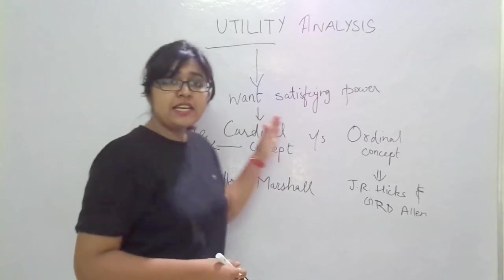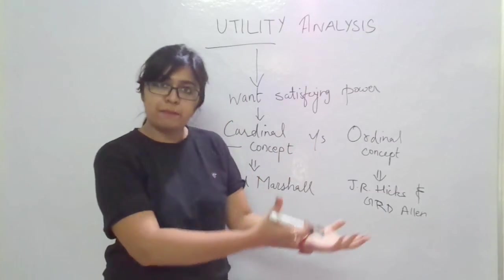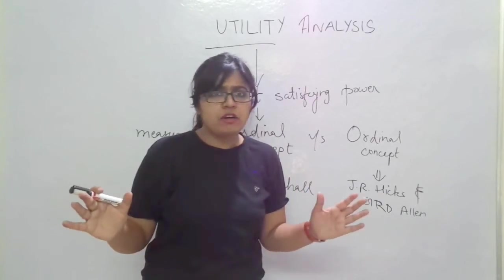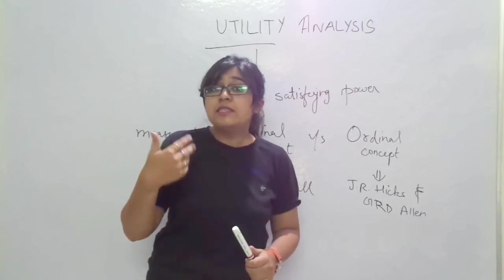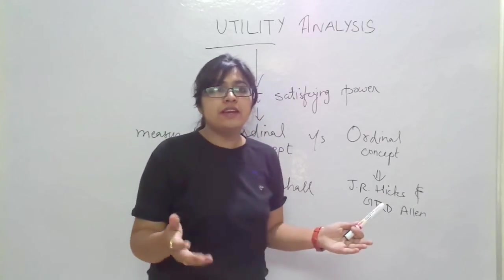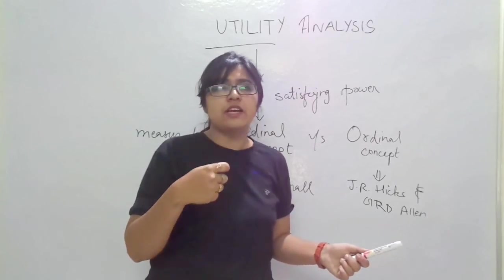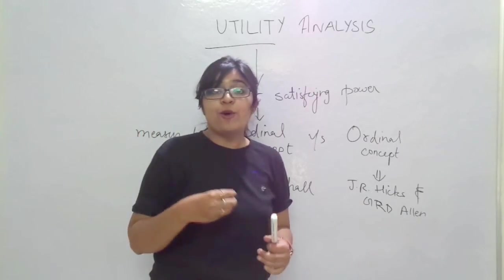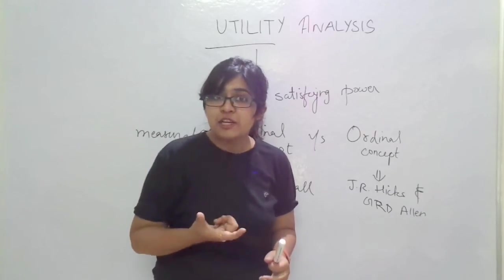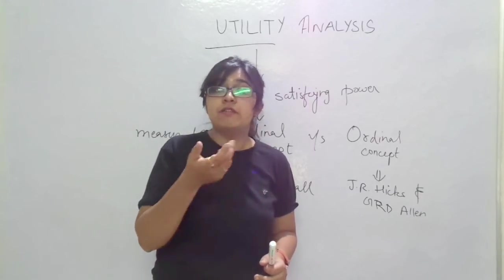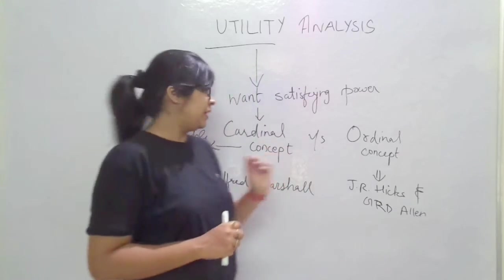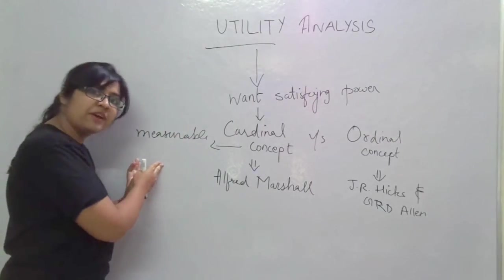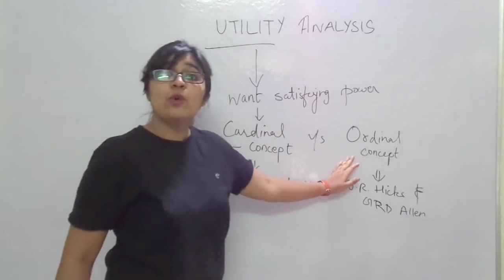So utility is the amount of satisfaction or the want satisfying power that you got by purchasing and eating that ice cream on a very hot and sunny day. And what is the measure of that satisfaction? You said that after eating one bite of ice cream, my satisfaction level is 100% or 100 units. So this value in monetary terms or in terms of some value, this term will be the cardinal concept, which means that now you have made utility a measurable concept. But then there is something known as ordinal concept.